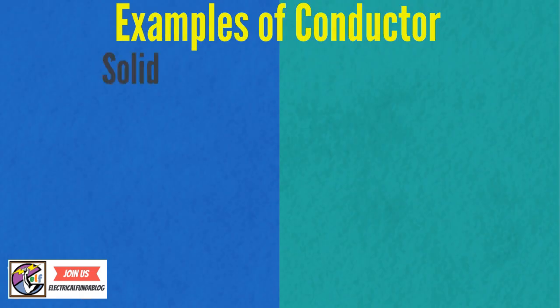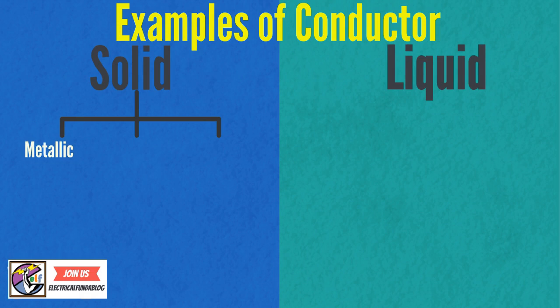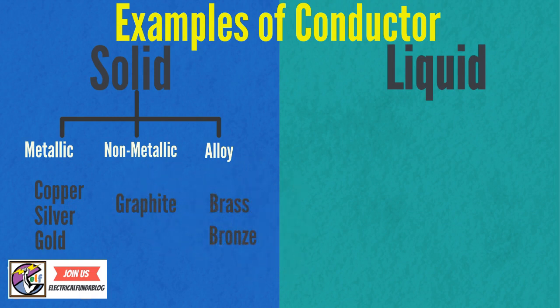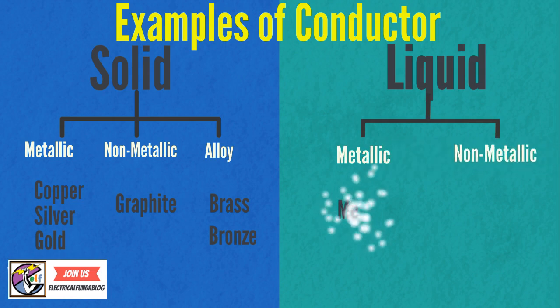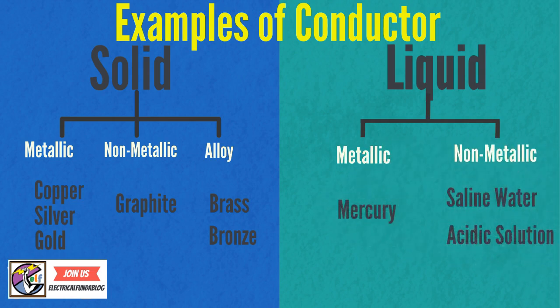Examples of conductor: basically it is divided into solid and liquid, further divided into metallic, non-metallic, and alloy. In metallic: copper, silver, gold. Non-metallic: graphite. Alloy: brass, bronze. In liquid, same categories—metallic and non-metallic. Metallic is mercury, and saline water and acidic solution are non-metallic. Thank you for listening.